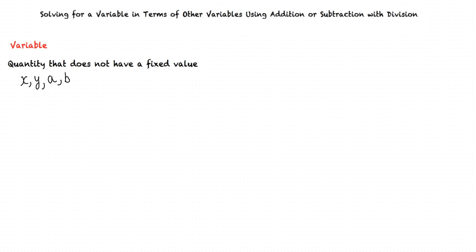This video will cover the topic of solving for a variable in terms of other variables using addition or subtraction with division. A variable is a quantity that does not have a fixed value, and hence it is represented by means of alphabets like x, y, a, and b. Here, we are going to solve for one variable in terms of other variables from a given equation.